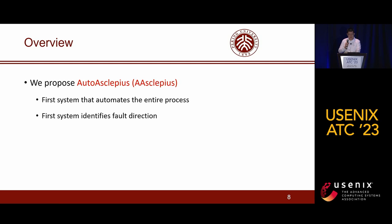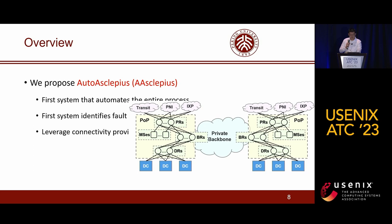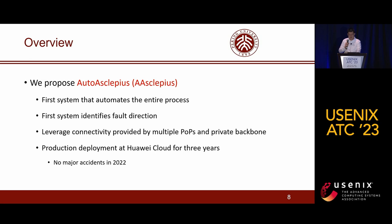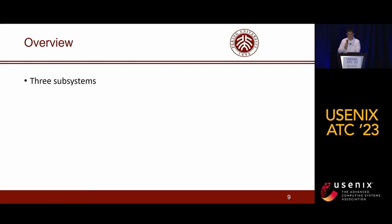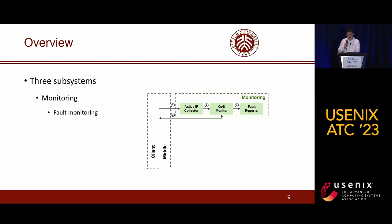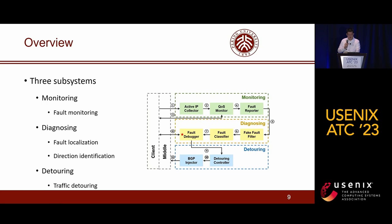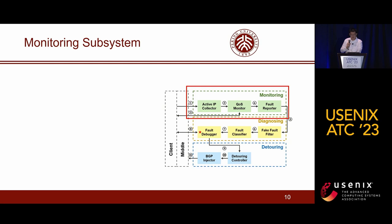AutoArcical Appeals leverages connectivity provided by multiple POPs and a private backbone interconnecting them for executing the entire process. That is to say, it can detour cloud traffic across different POPs through a private backbone to circumvent network faults. AutoArcical Appeals has been in production deployment at Huawei Cloud for three years and protected from major accidents in 2022. It consists of three subsystems: a monitor subsystem responsible for fault monitoring, a diagnosing subsystem responsible for fault localization and direction identification, and a detouring subsystem responsible for traffic detouring.